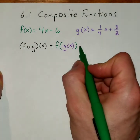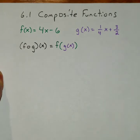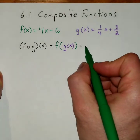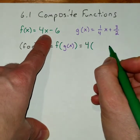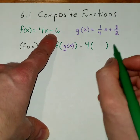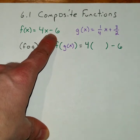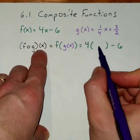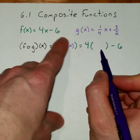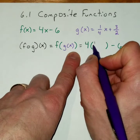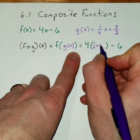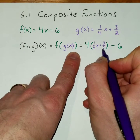The outer function is f, and the x becomes a set of parentheses minus 6. In that set of parentheses for the x, we're going to put the inner function, which is ¼x plus 3/2.